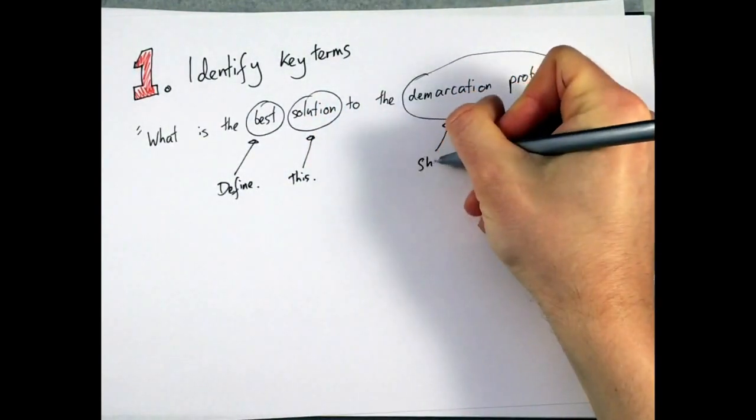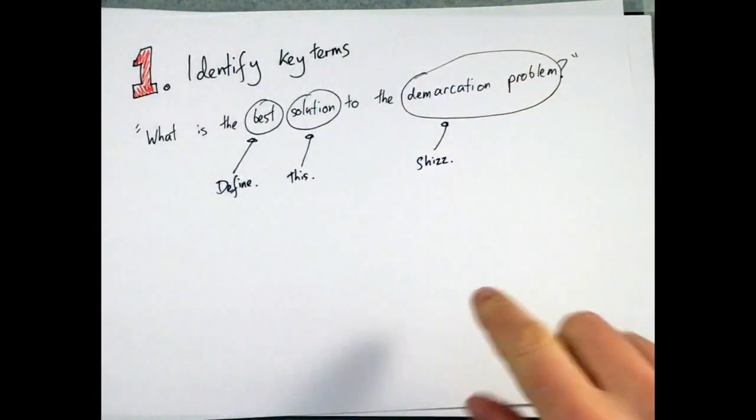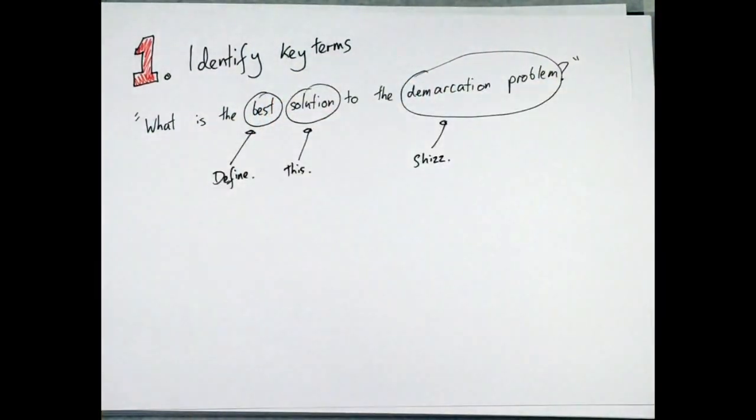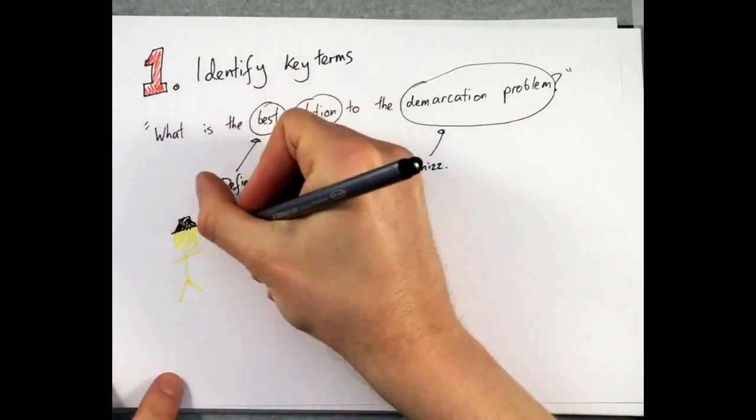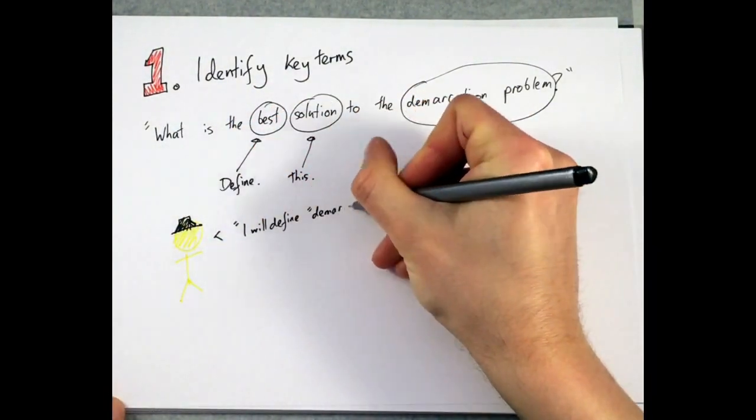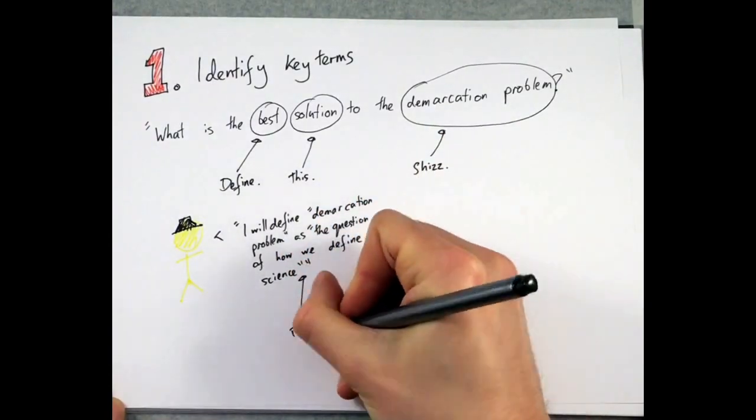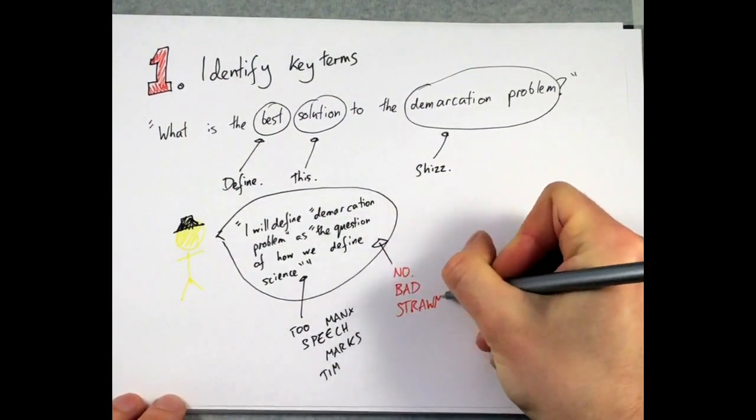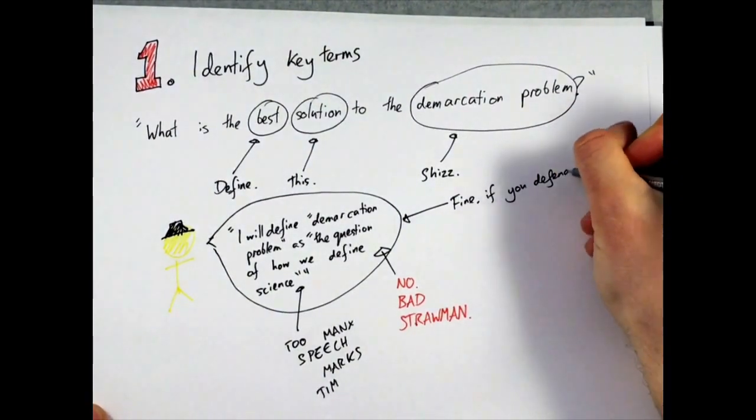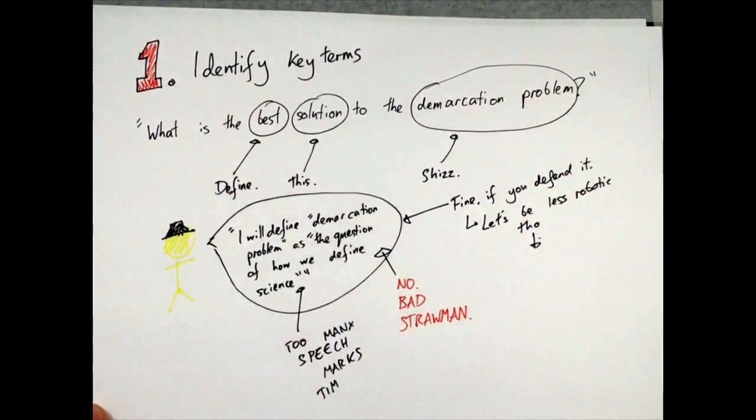This is essential, because your argument has to have a clear definition of the terms you're using in order for it to be coherent and responsive. This doesn't mean you should use lazy constructions like, I am going to define demarcation problem as the question of how we can define science. That is a perfectly reasonable definition, if you can defend it, and you should give a reason you've chosen a certain definition. But you need to be a little less clunky.